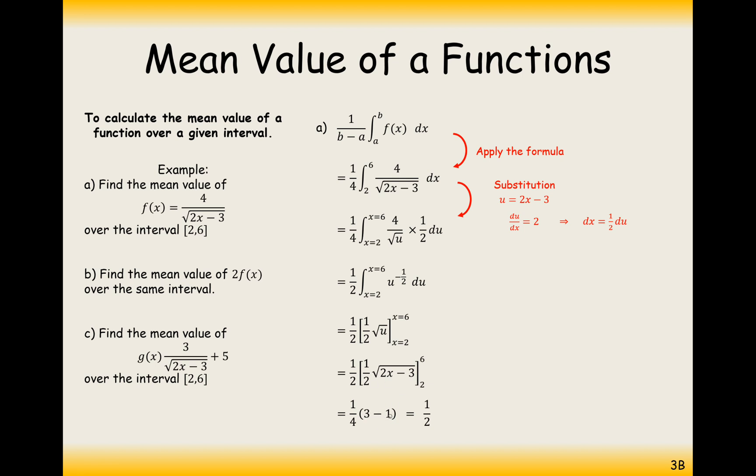So it's four, three minus one, which is two. Two quarters is one half. So the mean value of this function, the average height of the graph between two to six is a half.